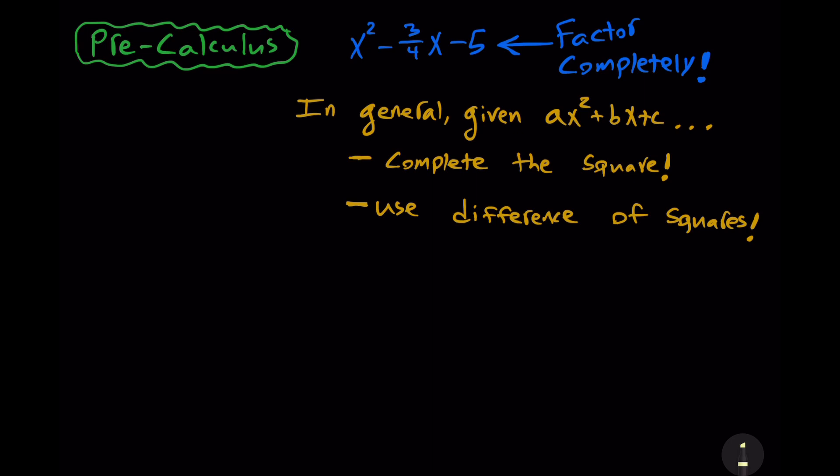And today, we're going to confront the problem to factor completely the expression x squared minus 3 fourths x minus 5. I don't know about you, but there's no way I can guess my way to an answer. Unless you're some kind of math prodigy, I pretty much guarantee that you can't do it either.